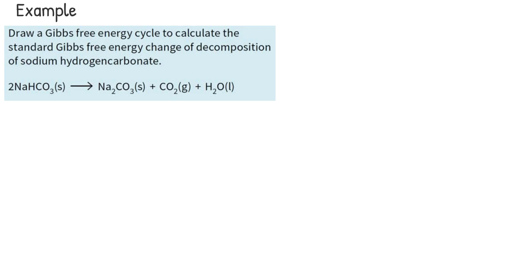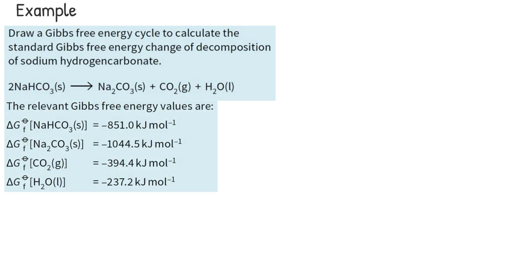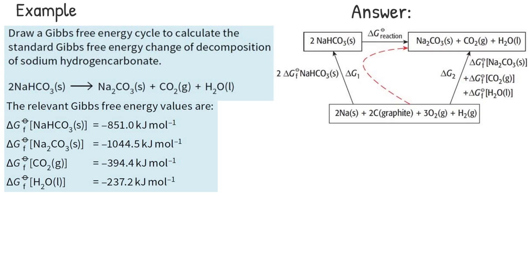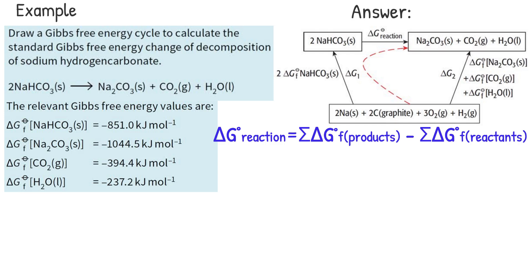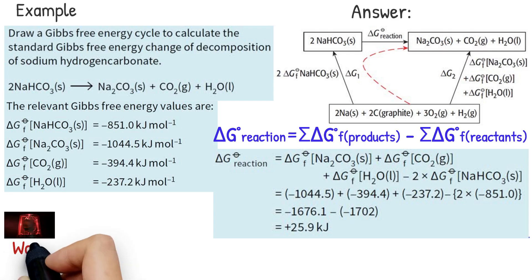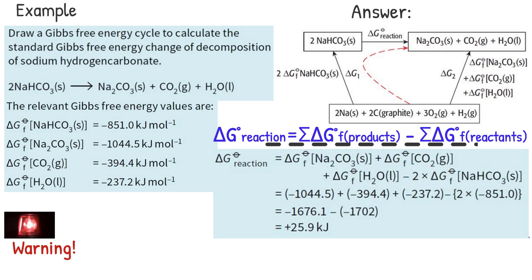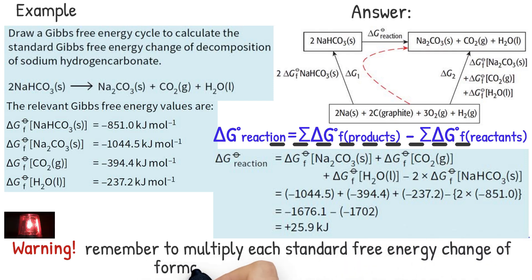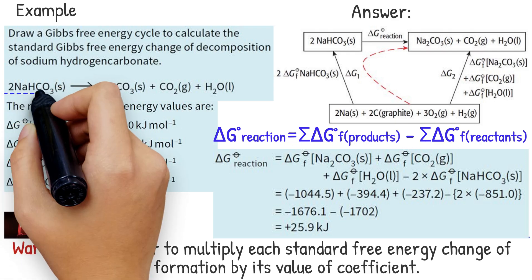Another example: Draw a free energy cycle to calculate the standard free energy change of decomposition of sodium hydrogen carbonate. The relevant free energy values are shown below. This is the free energy cycle for the decomposition of sodium hydrogen carbonate. The dashed line shows the two-step route. Using this formula, the free energy change for this reaction is calculated. The value of free energy change for this reaction is positive, so under standard conditions the reaction is not spontaneous. However, free energy change varies with temperature, and at a higher temperature this reaction is spontaneous. Warning: when using this formula, remember to multiply each standard free energy change of formation by its stoichiometric coefficient, as done for sodium hydrogen carbonate.